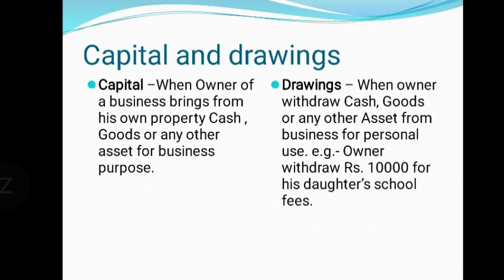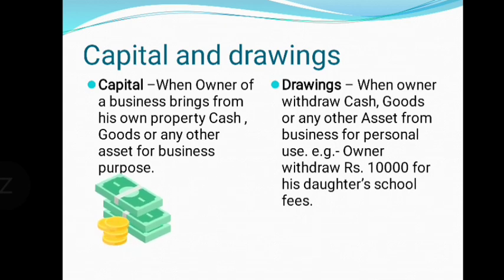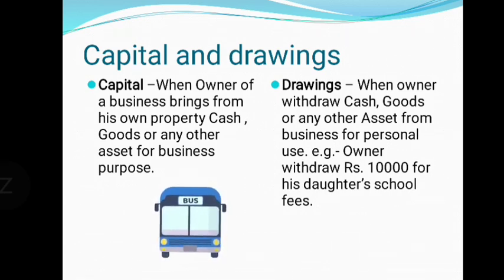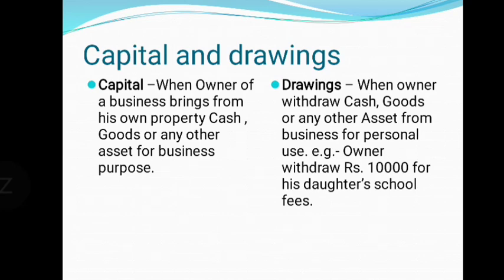Next is capital. Capital means when the owner of a business brings something from his own property — this is the most important thing. He has to bring things from his own assets. He can bring cash, or goods from his own household, or any other asset for business purpose. For example, if he brings rupees one lakh to start a business from his own property, that one lakh rupees is called his capital. If he uses his private van for delivering goods and the title of that van is transferred to the business, that is also called capital.